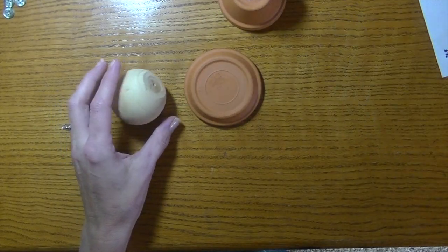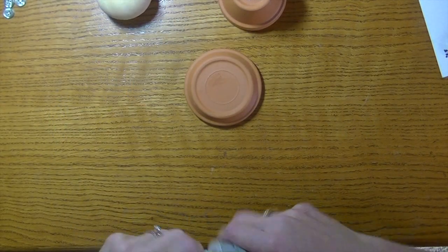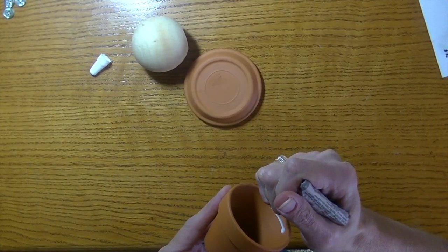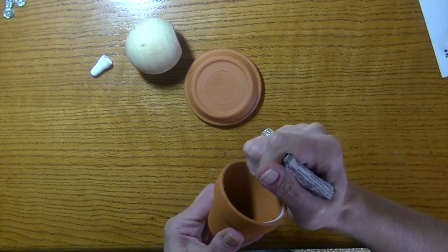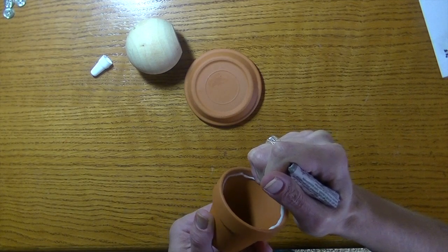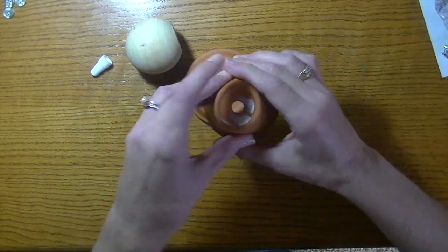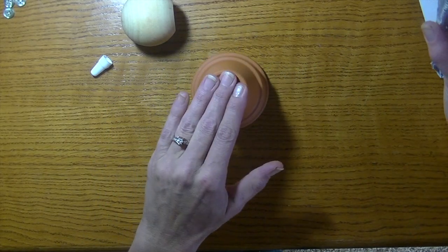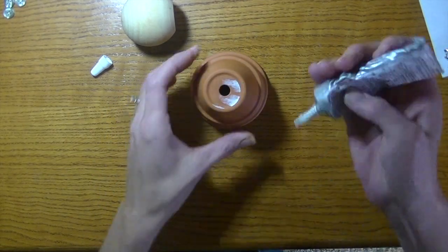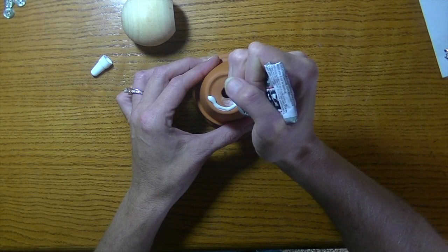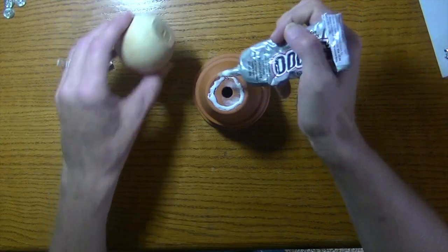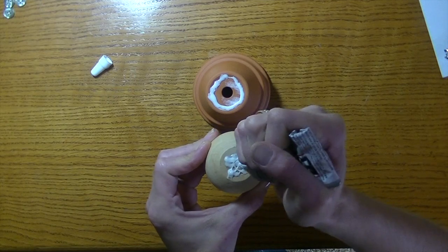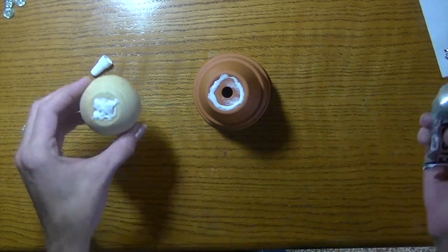I'm going to go ahead and grab my E6000 glue. You want to use a strong glue and I'm actually going to put the glue on the inside rim of this pot here. You can probably use hot glue as well, any kind of strong glue you have is fine. We're just going to kind of set that on there like that.